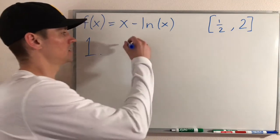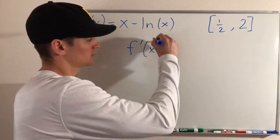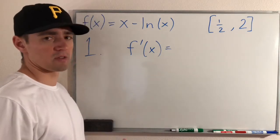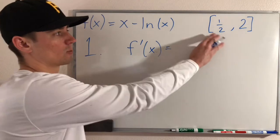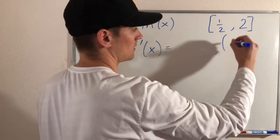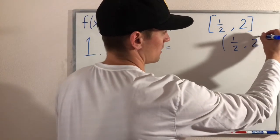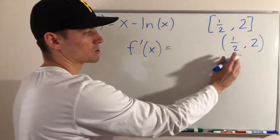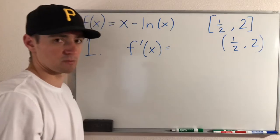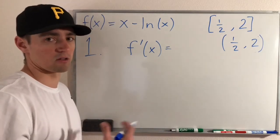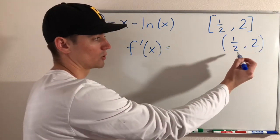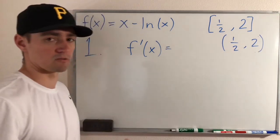The first thing we need to do is find f prime of x, and we're going to use this to find our critical numbers. The important thing is we only want to consider the critical numbers that are within the open interval with the same endpoints — so we don't need to worry about x equals one half or x equals two yet. For now, we just need the critical numbers that are between but not including our two endpoints.